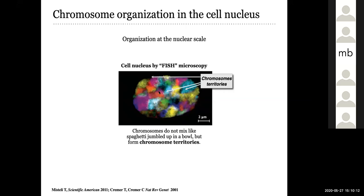FISH is a technology that allows you to stain each different chromosome with a different color. So each color is a chromosome, and you see immediately that they do not mix randomly together. There is a pattern — they tend to occupy specific regions in the cell nucleus, not in a random way. These regions have been called chromosome territories, and this was very surprising at the time.